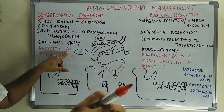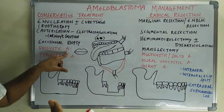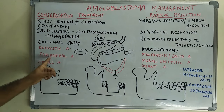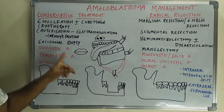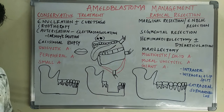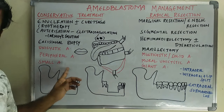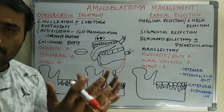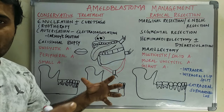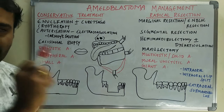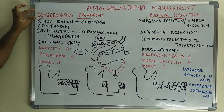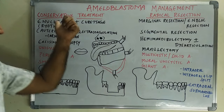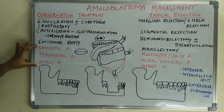Mural unicystic ameloblastomas, however, have invasiveness and are aggressive — they should be treated by radical resection. Peripheral ameloblastomas can be treated by excisional biopsy or other conservative treatment. Small ameloblastomas involving only the central part, that is the medullary portion, with not much expansion of cortical plates, can also go for conservative treatment. But remember, there is always a risk of high recurrence with conservative treatment.